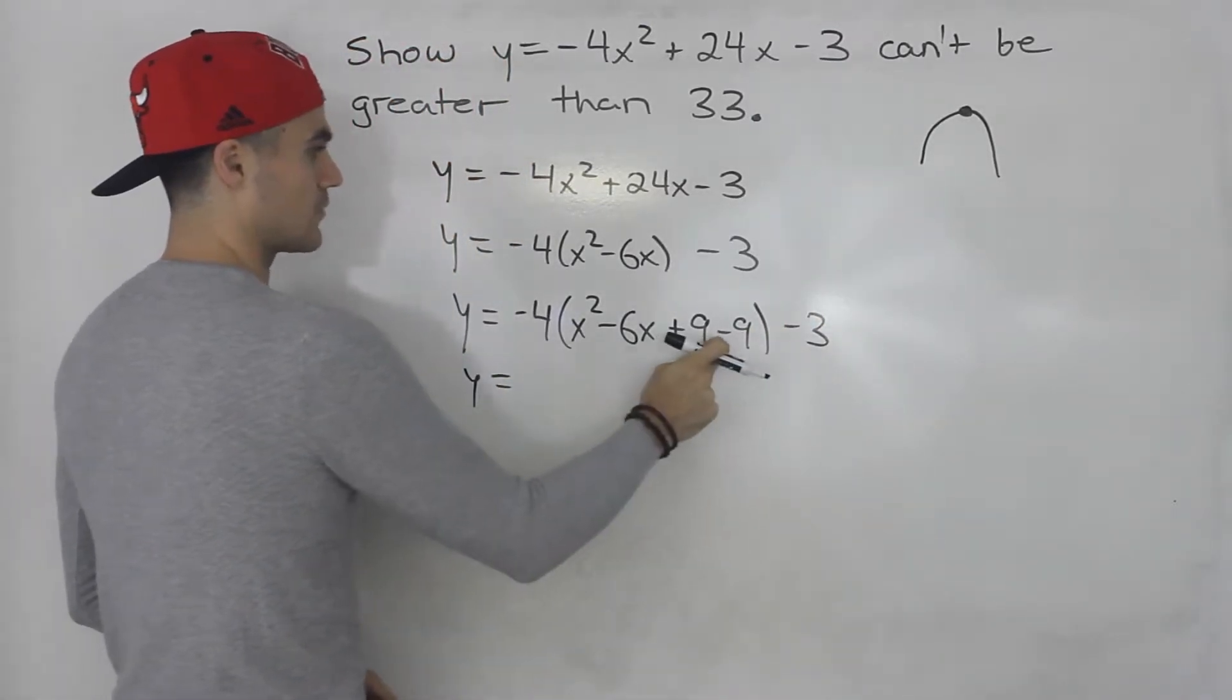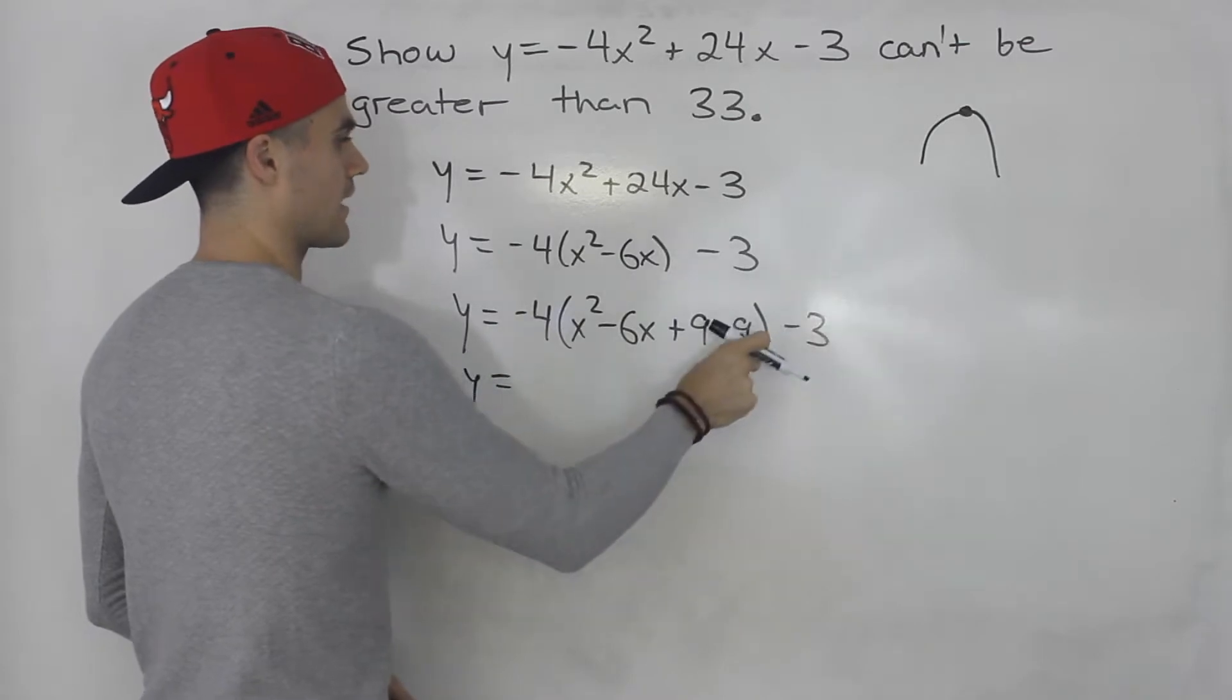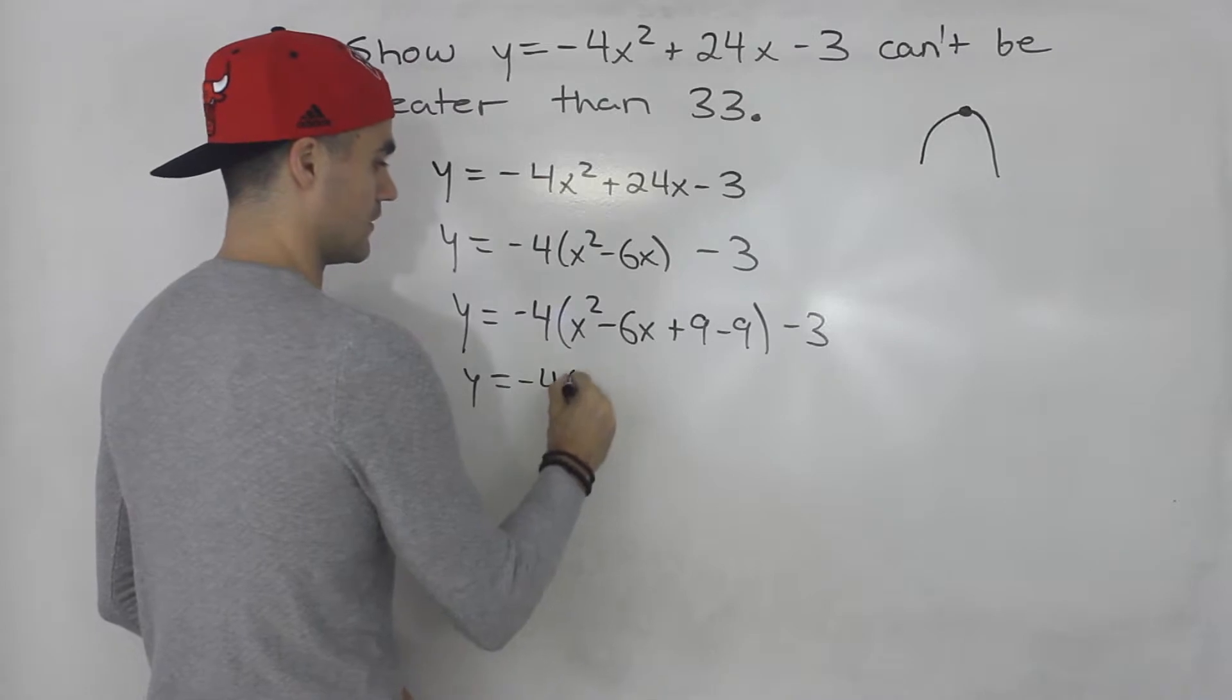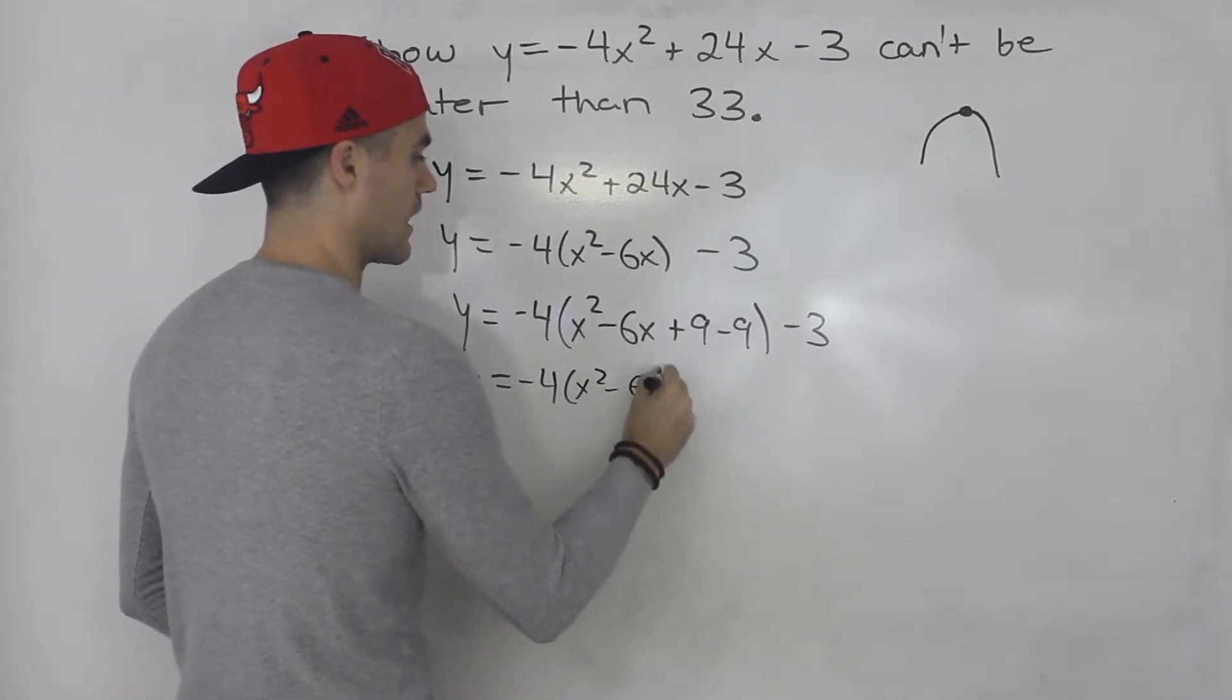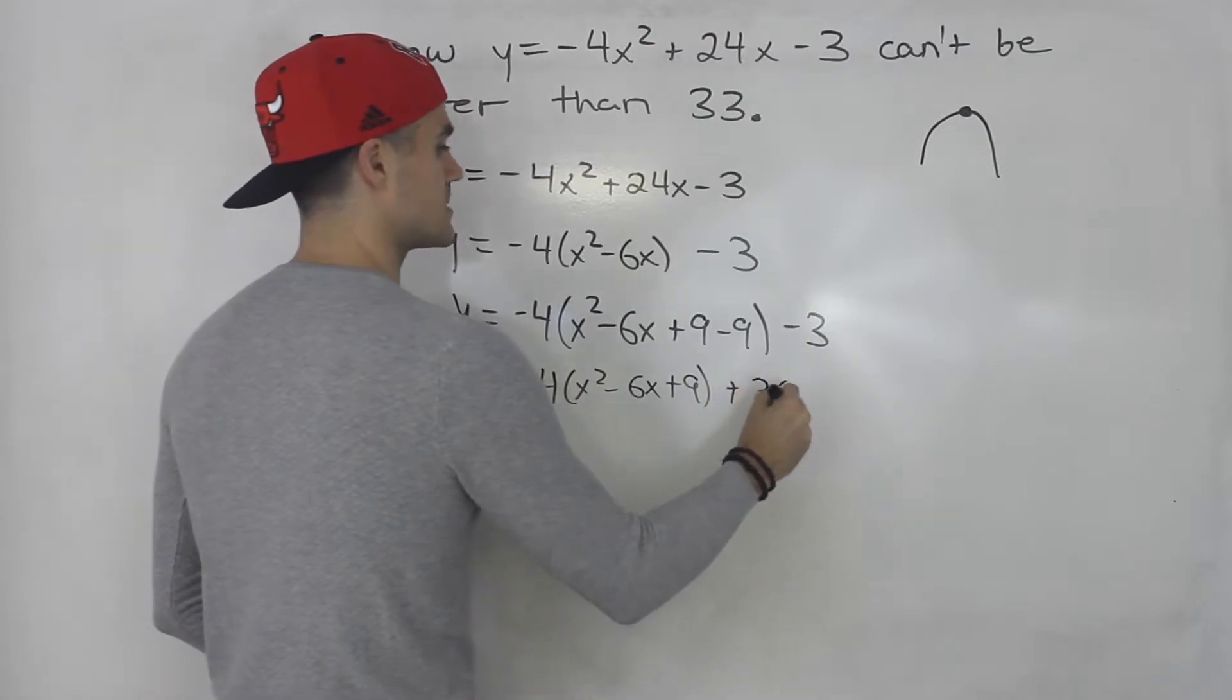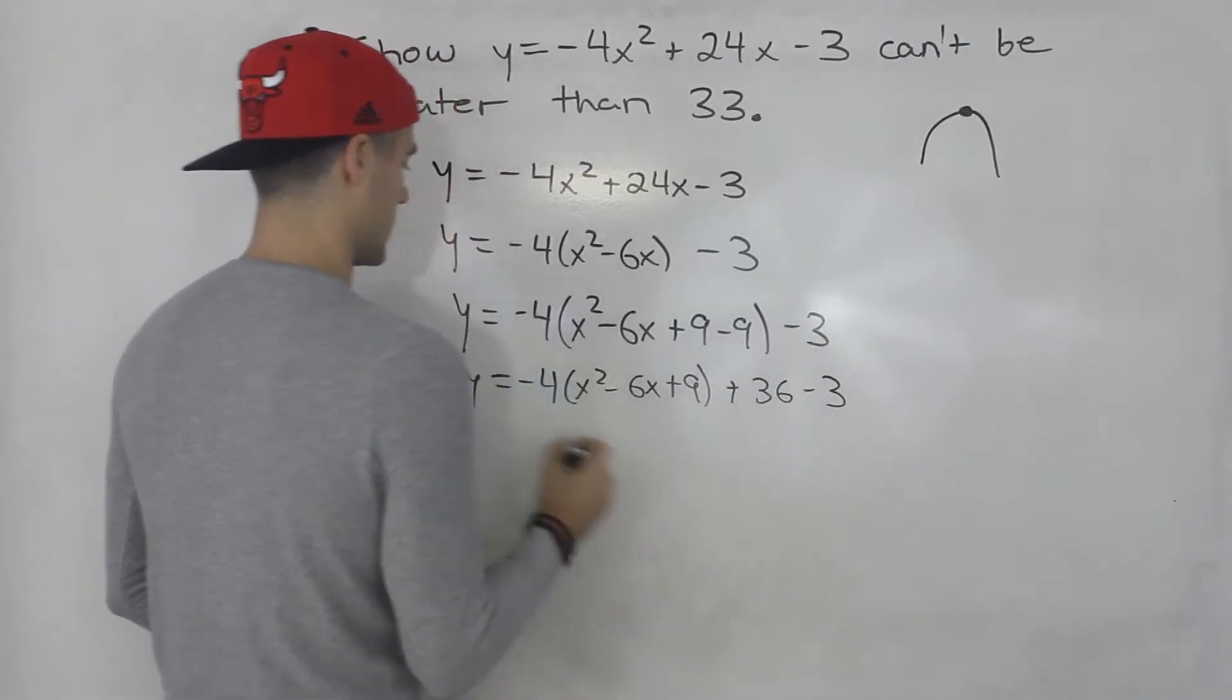We have to get rid of this -9 and bring it outside the bracket. When we bring it outside we've got to multiply by this -4 here. So rewrite everything as is: -9 times -4 gives us +36 minus 3.